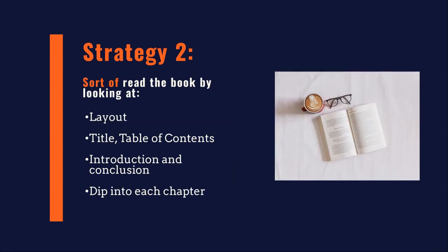So let's say you need to go a step further. Strategy two is to read the book by looking at the book. The first thing you want to pay attention to is the book's layout — how is it organized? You can use the title and the table of contents to help you assess what the subject is and how the material is organized. Read the introductions and conclusions, both to the book as a whole and to each individual chapter. Then, after you have a sense of what the table of contents are about, you can dip into those chapters that are of interest to you and read those. This is usually what academics mean when they say they 'read a book' — very rarely does it mean they've read the book cover to cover.